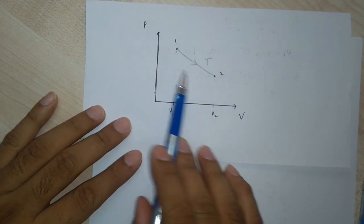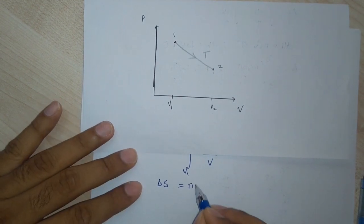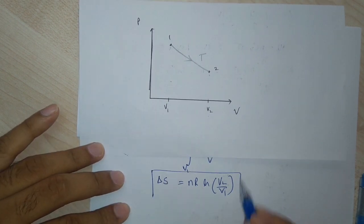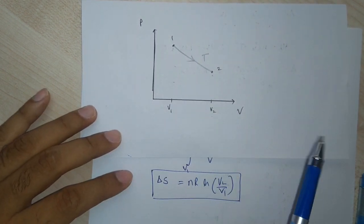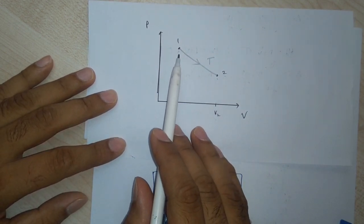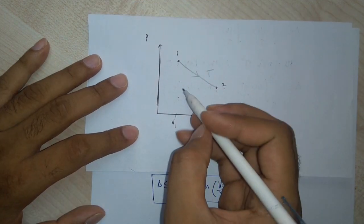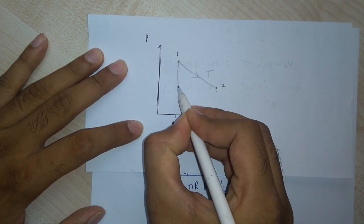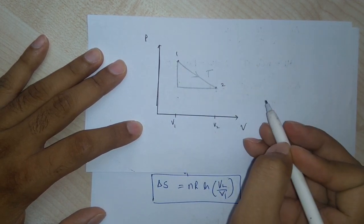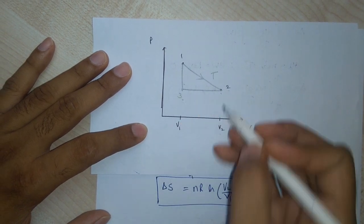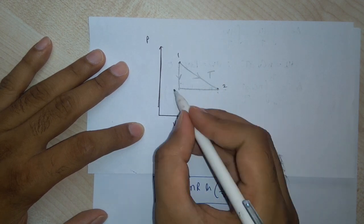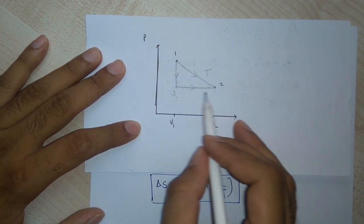The change in entropy going from 1 to 2 along the isothermal path equals nR ln(V2/V1). This is the change in entropy along an isothermal path. Now, to show that the change in entropy is independent of path, we will go along a different process — from state 1 to state 3 as an isochoric process and from state 3 to state 2 as an isobaric process.